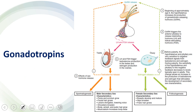GnRH comes from the hypothalamus, travels through the hypophyseal infundibulum to the anterior pituitary, where it increases activity and works on the anterior pituitary gonadotropins, resulting in FSH and LH being released.